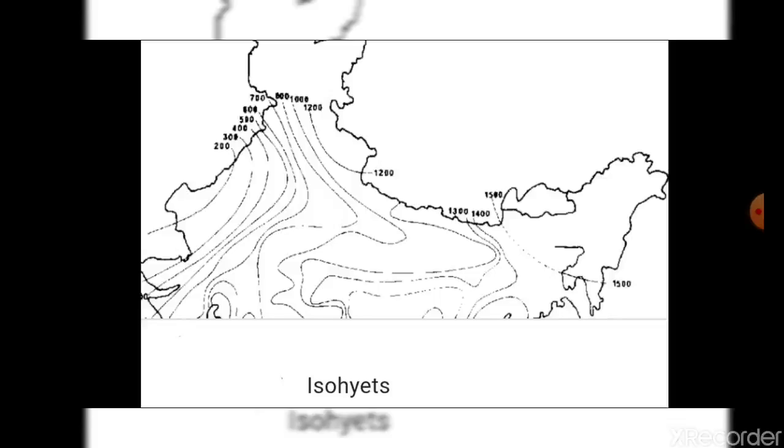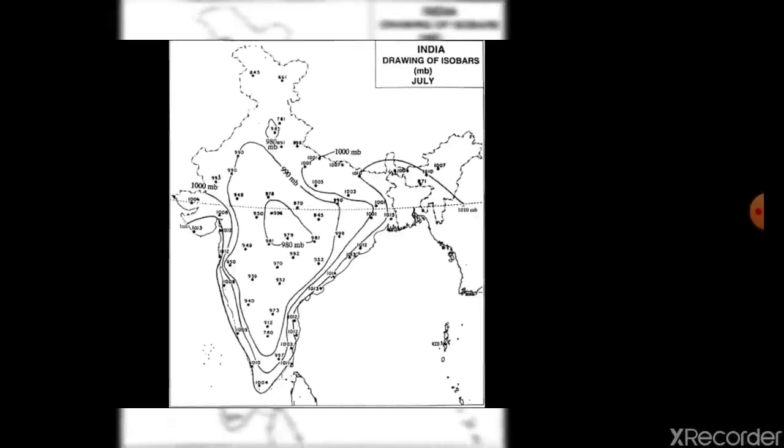In the same way, atmospheric pressure and rainfalls are also depicted through maps, through iso heights and isobars. An iso height is a line on the map that connects the places having the same amount of rainfall in a given period. An isobar is a line on the map that connects places having the same atmospheric pressure at a given time or on average over a given period.